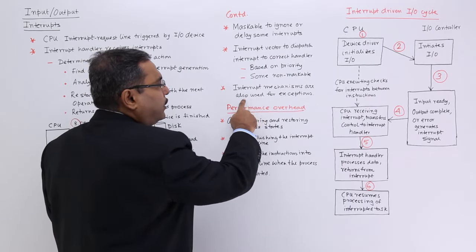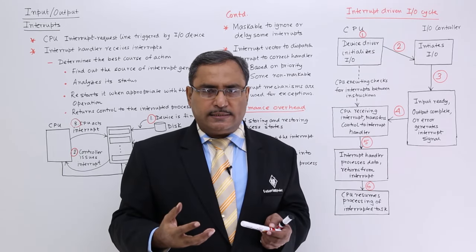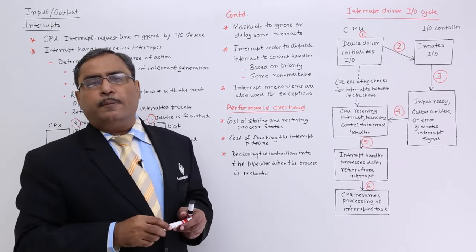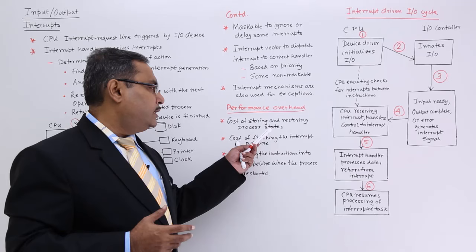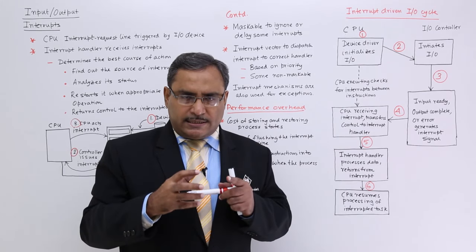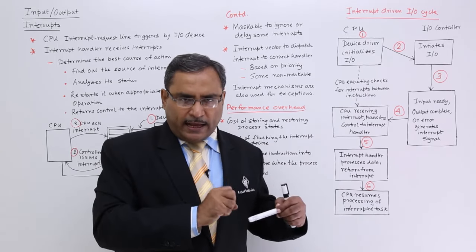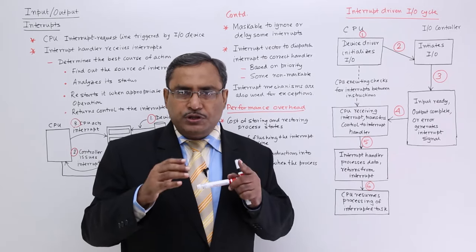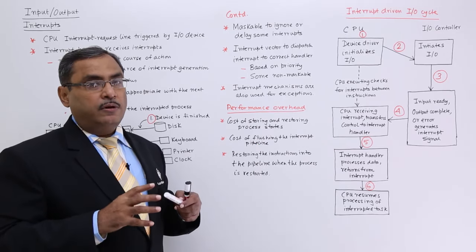Interrupt mechanisms are also used for exceptions — when some erroneous condition has taken place in the system, that situation can also be handled by this interrupt mechanism. Regarding performance overhead: if an interrupt occurs, there are costs the system must bear. The first is the cost of storing and restoring the process state, because the process is getting suspended. All data scattered across different CPU registers must be saved in some zone, so that when the process is resumed it can do so smoothly.